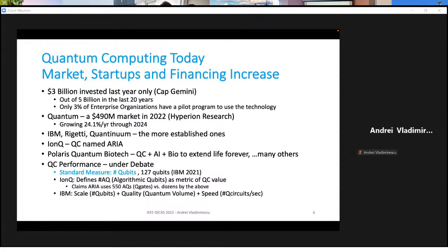Today it's like half a billion dollar market, but the growth rate is expected to be around 25 percent. Some of the names of the more established companies are IBM, Rigetti, Continuum. And then there are a lot of startups like the most funny one is Polaris Quantum Biotech, which combines quantum computing with AI and biotech. Very interesting that if they succeed, we'll live forever. But I won't be around to find this out. I hope that some of you will.